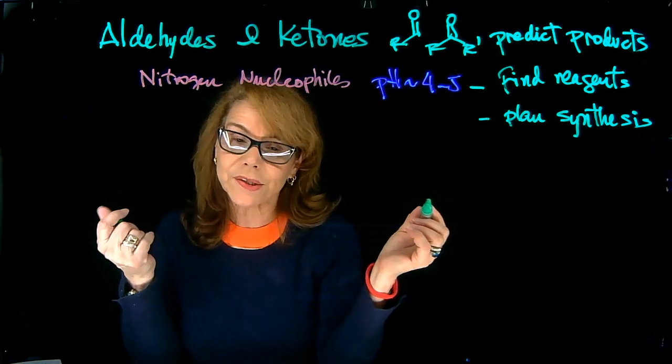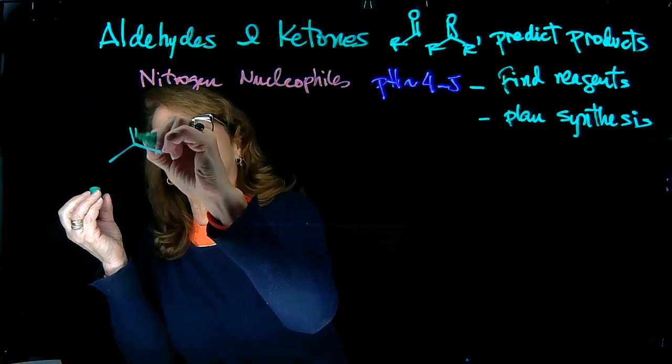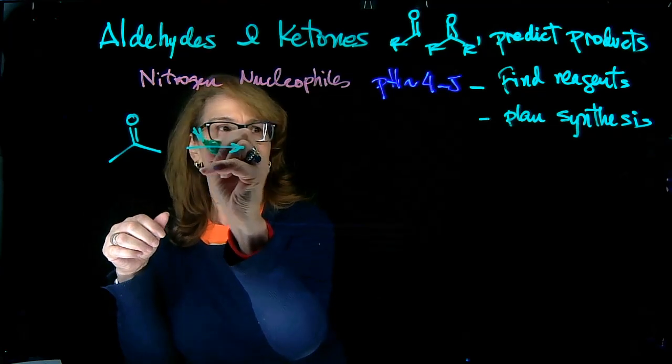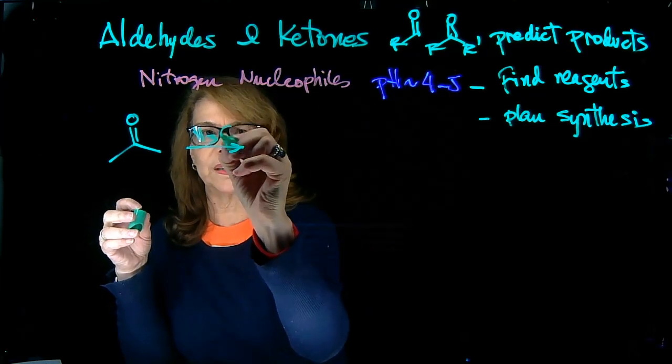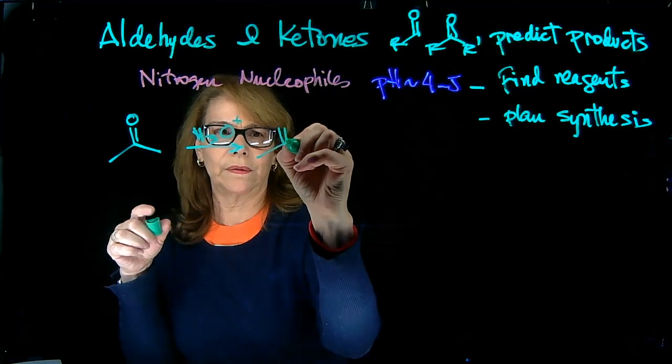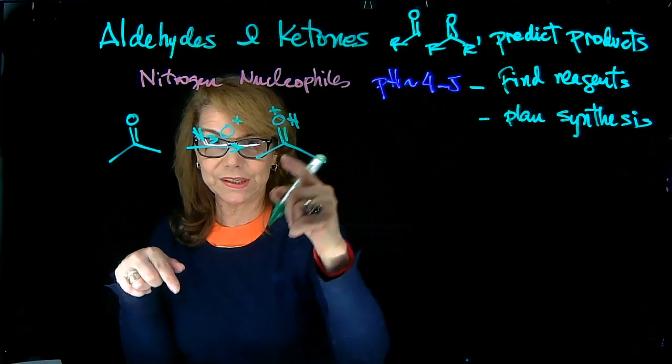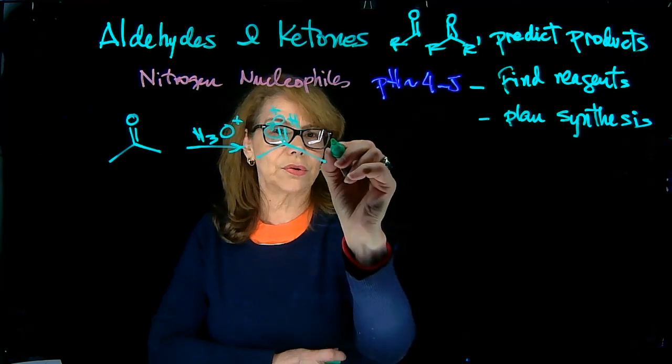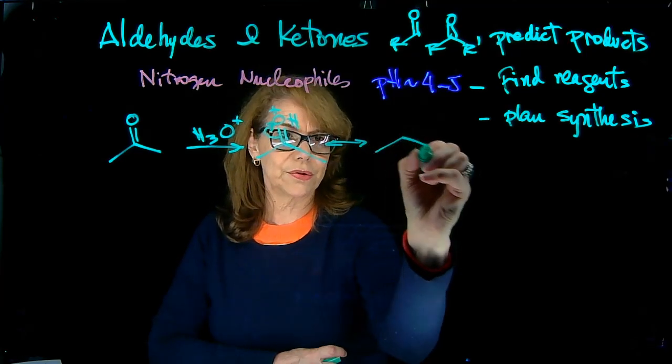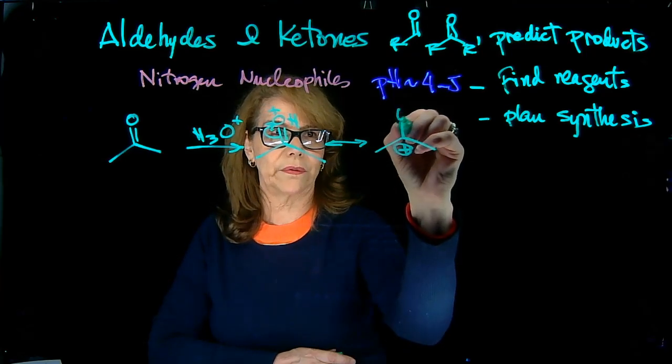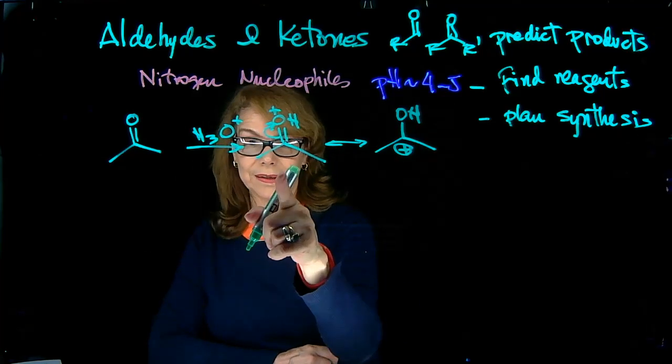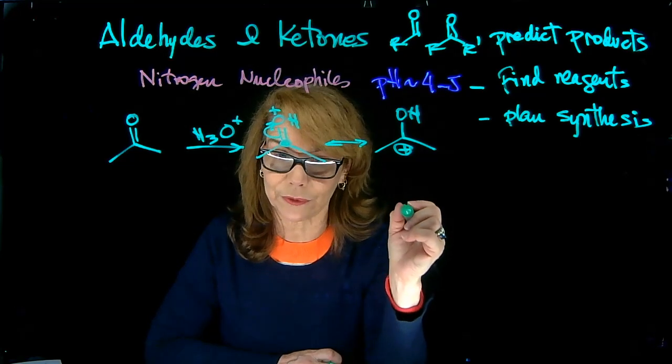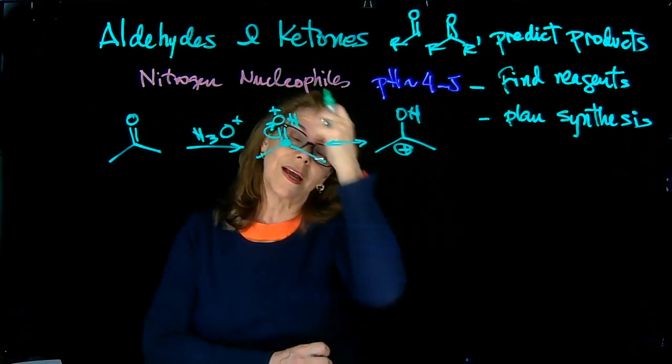When the pH is moderately acidic, you can have that protonation, but not extremely acidic. And you can form this. And this species is more electrophilic. Remember that here you can draw a resonant structure, and in that resonant structure, the carbonyl is positive. And so acid catalysis makes the carbonyl carbon more electrophilic. Stronger electrophile is faster.